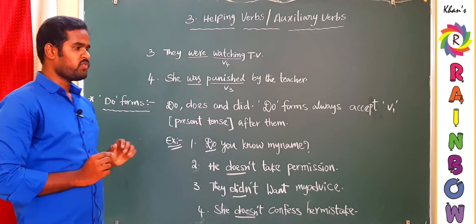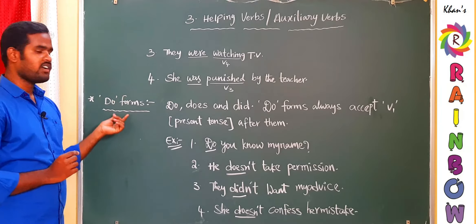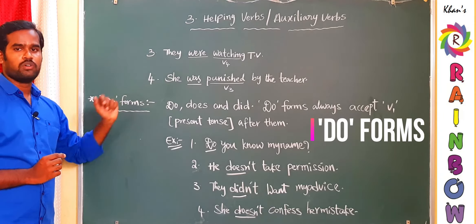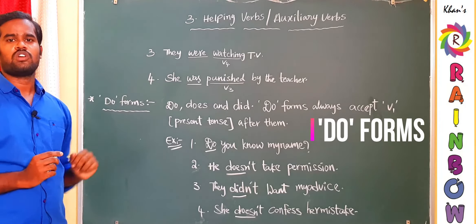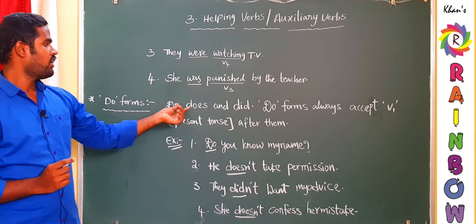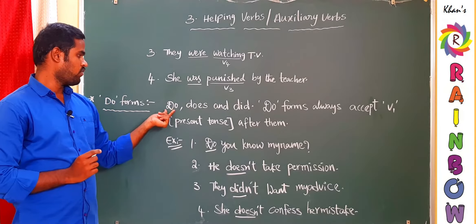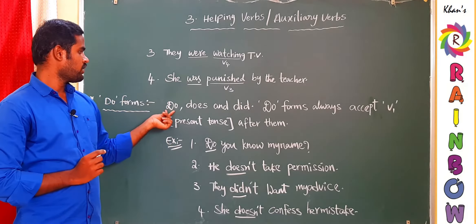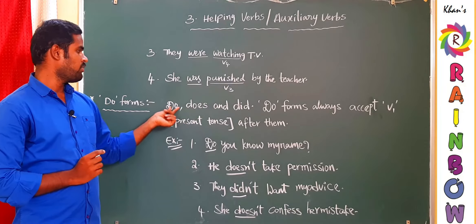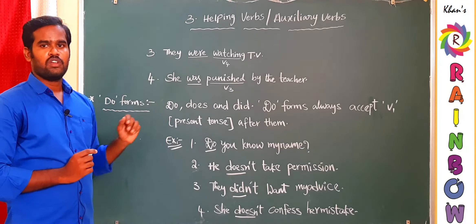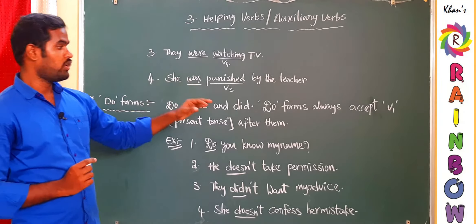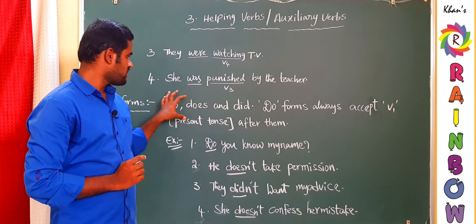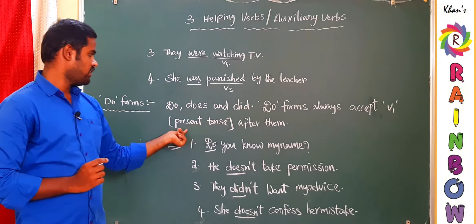The second type of helping verbs is Do-forms. Do-forms are three in total: number one — do; number two — does; and number three — did. If you observe the common pattern, they all begin with the letter D.